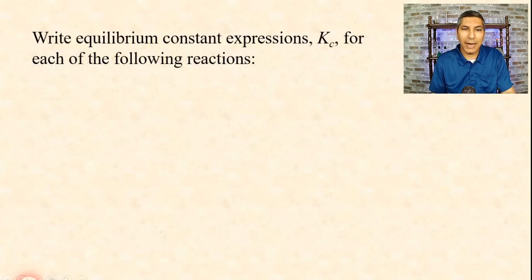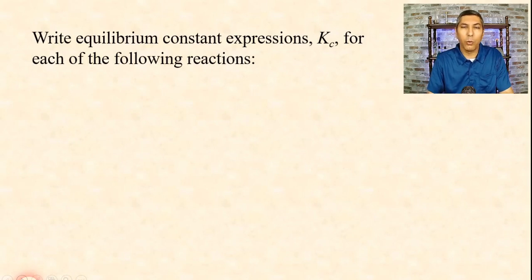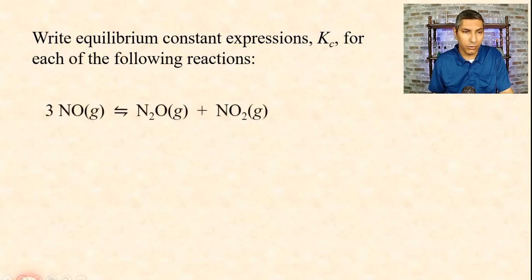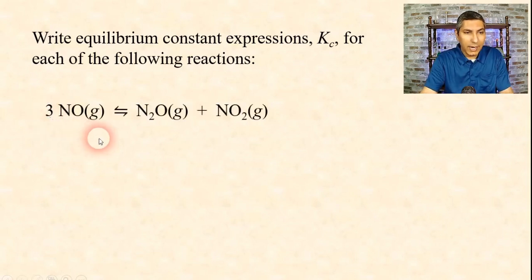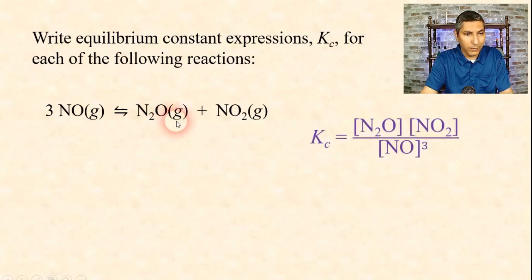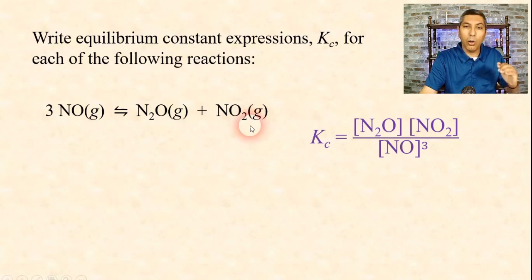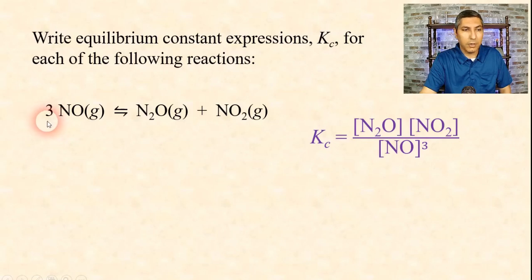Now let's do some practice with writing equilibrium constant expressions, Kc, for each of these reactions. Once again, it's products over reactants raised to the power of the coefficients. Kc equals the concentration of N2O times the concentration of NO2, all over the concentration of NO cubed — because there's a three as our coefficient right there.